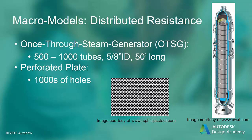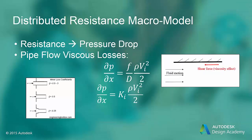Instead of modeling each individual tube or perforation, distributed resistance models are used. The many tubes or holes or other flow obstacles have the effect of increasing the pressure drop on the fluid flow. They may also change the flow direction, but overall it is the pressure drop that is most affected. Recall from viscous pipe flow studies there were two losses used to represent viscous effects: the major loss, due to the shear resistance of the pipe walls, and the minor loss, due to anything else that would cause losses, like entrance effects or valves. The distributed resistance macro model uses these same loss models to represent the excess pressure drop due to the presence of tubes or other obstacles.